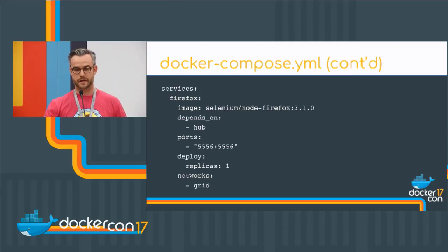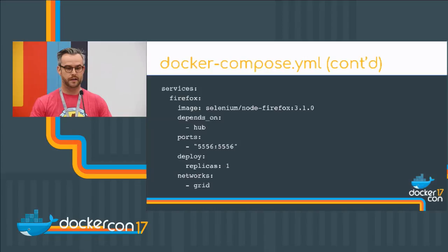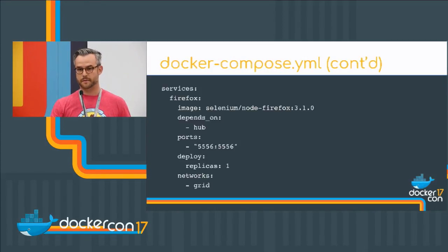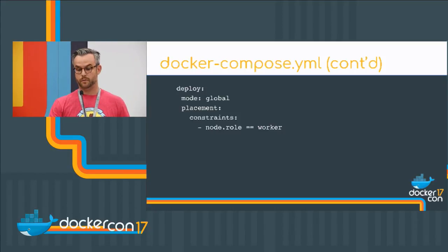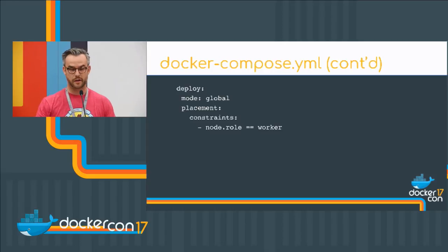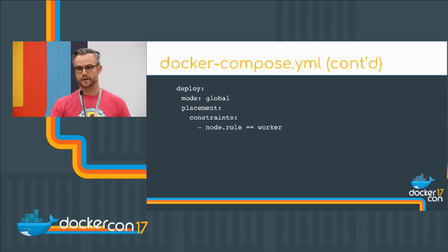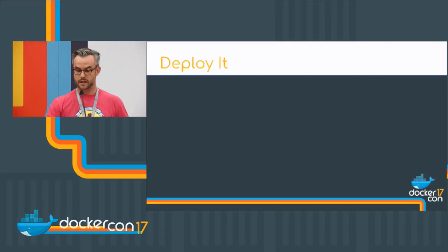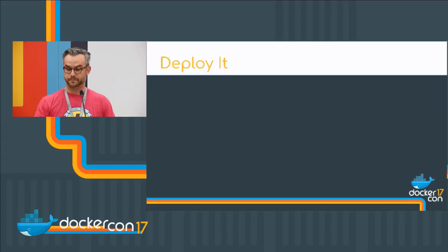Next, we do the same for Firefox — it has similar options, with only one replica and also on the same grid network. We place some constraints when we run these so that they only run on the Docker workers instead of the Docker managers, since the tests can become pretty CPU intensive. Now we want to deploy it and run it against our Docker swarm.